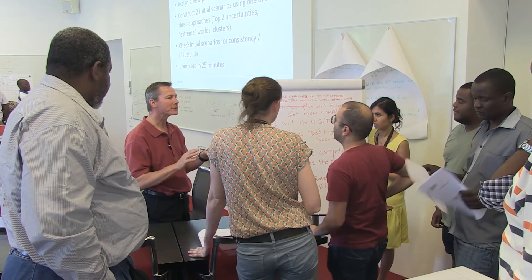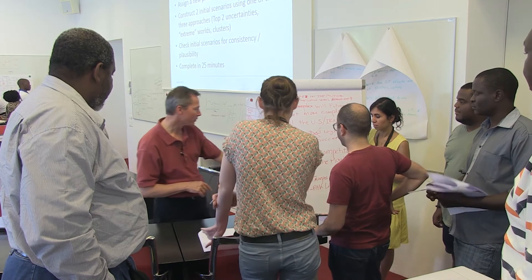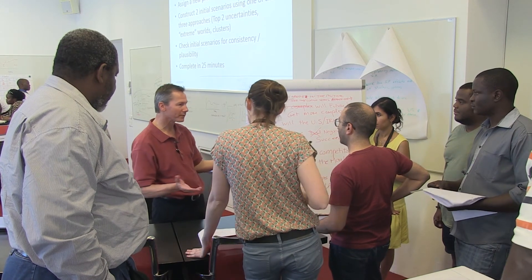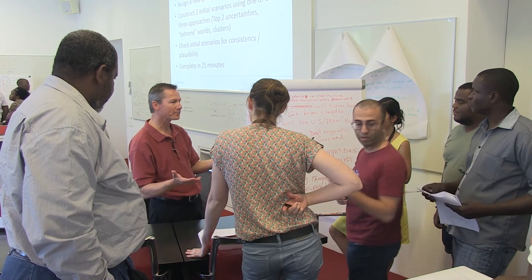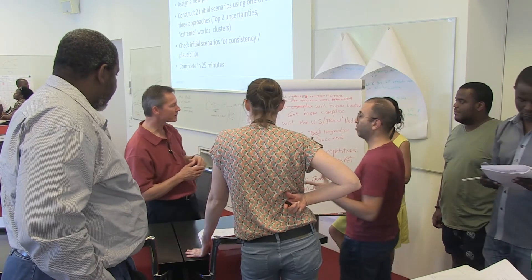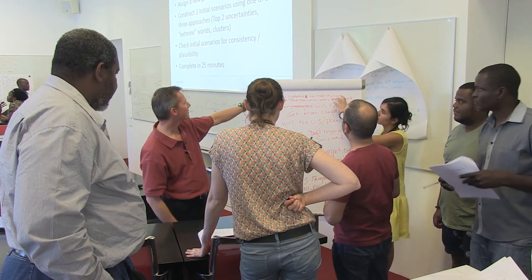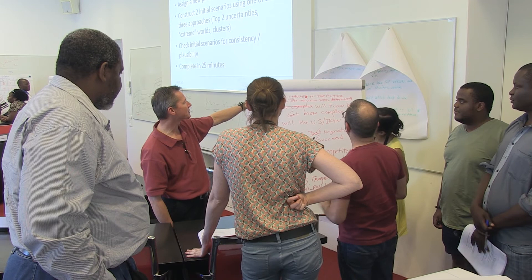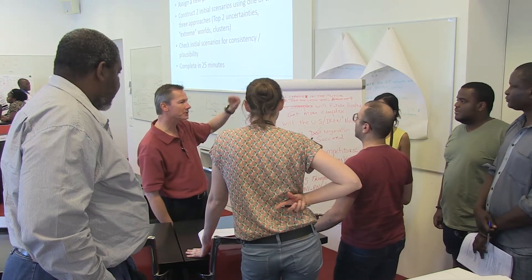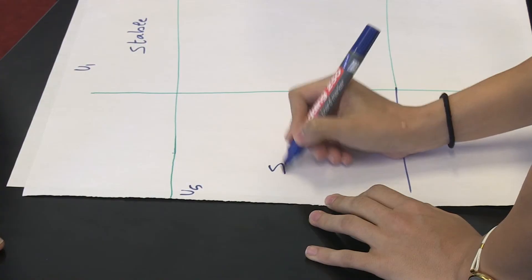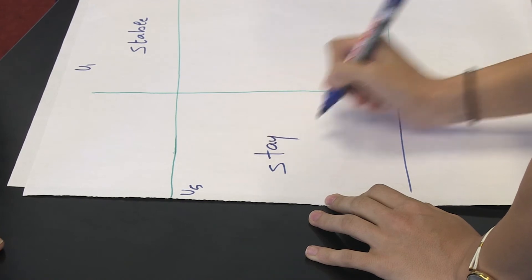The possible outcomes are troops will not leave and troops will leave — those are your possible outcomes for your matrix, one and two. And then this one is stable political landscape, so stable and unstable would be the two there. So there are your four points on your matrix.